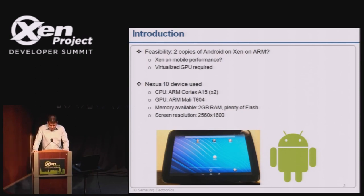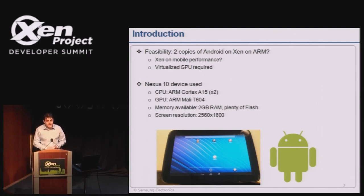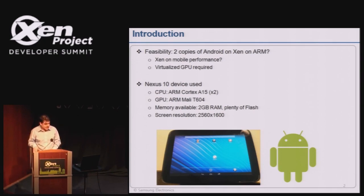The Nexus 10 device we used is commodity, commercially available, unmodified hardware - you can just buy it from Google Play. It has two Cortex-A15s, so it's running Xen on ARM. The GPU is a Mali T604, an ARM GPU. The ARM ecosystem has many different GPU vendors, so it's important that we support all of them to be successful. Memory is a constraint - we have two gigabytes of RAM.